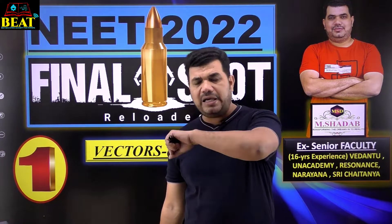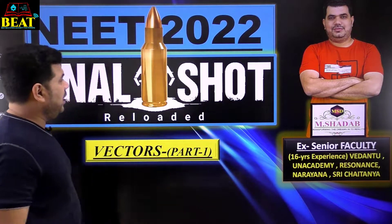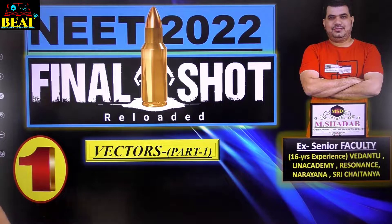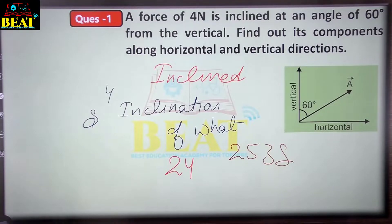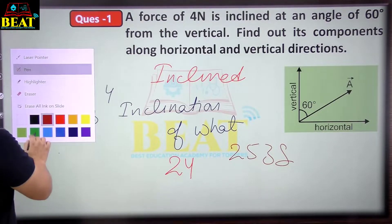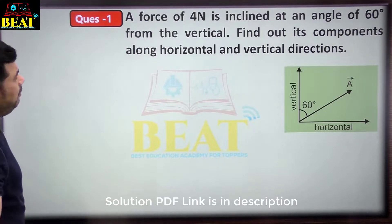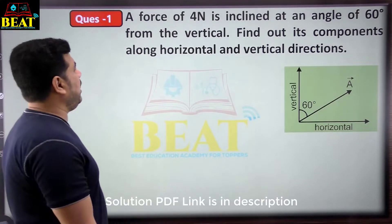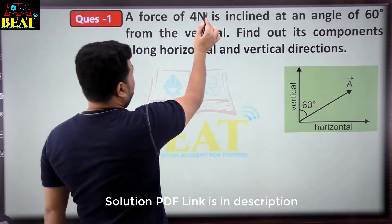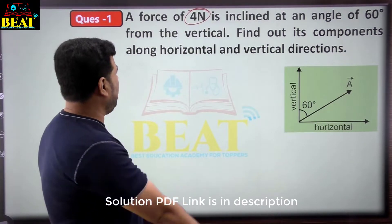Are you ready guys? That's great. Let's look at the first question. This is the first Final Shot for NEET 2022. The question says: 404 Newton — underline it quickly and try to solve it fast. Force of 4 Newton is inclined at an angle of 60 degrees from the vertical.